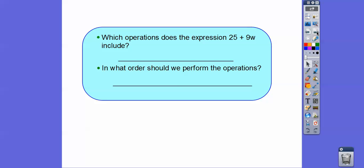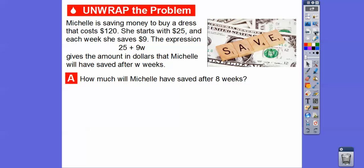Which operation does the expression 25 plus 9w include? Well, it's obvious there's a plus sign right here, so addition. But 9w also is multiplication, so multiplication and addition. Which order should we perform the operations? Well, order of operations always says we have to do multiplication first. So we'll do multiplication first and then we'll do the addition second.